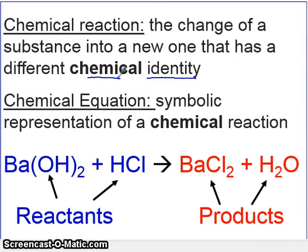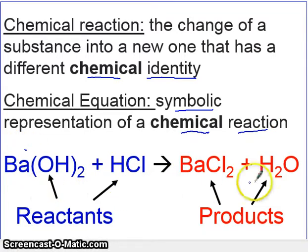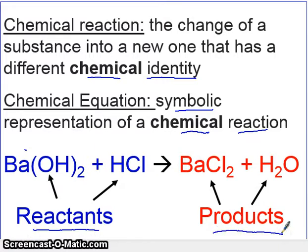A chemical equation then is a representation of that change. It's a symbolic representation of the chemical reaction itself, and we list everything about the chemical reaction that happens. Here is a general representation of a chemical reaction. On the left side, you see we have reactants, the substances that are reacting. On the right side, we have products, what is produced.